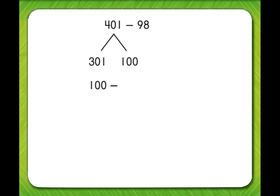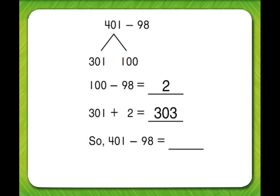100 minus 98 equals 2. 301 plus 2 equals 303. So, 401 minus 98 equals 303.